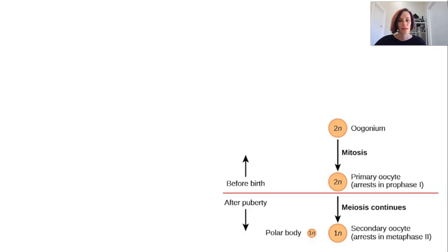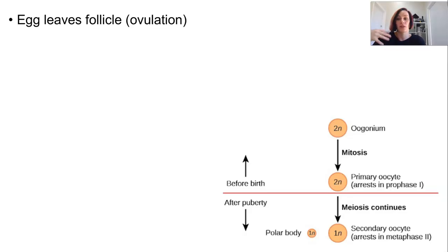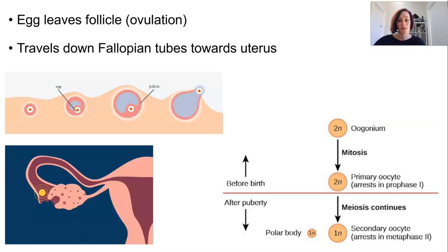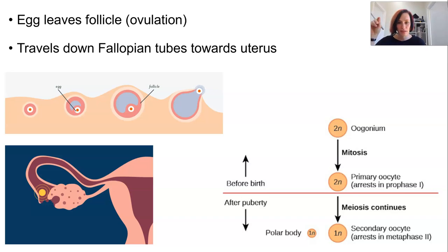The new haploid cell with most of the cytoplasm and the polar body are now part of the mature follicle. At this point the follicle bursts, releasing them into the fallopian tubes — this is ovulation, occurring around day 14 of the menstrual cycle. Even though the second meiotic division hasn't happened yet, our haploid cell is now called a secondary oocyte. Once ovulated, it travels toward the uterus and can last about 24 hours before it begins to break down.